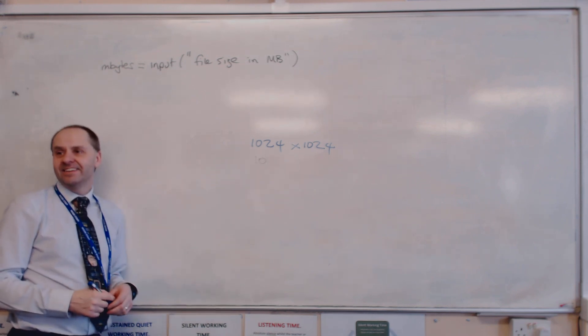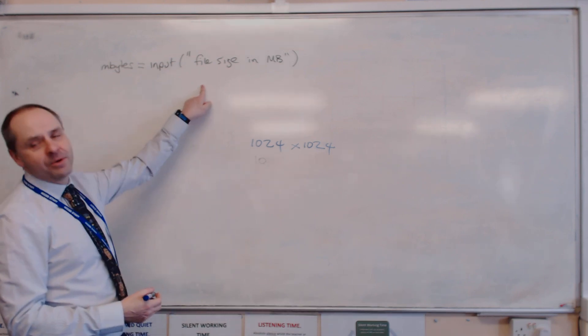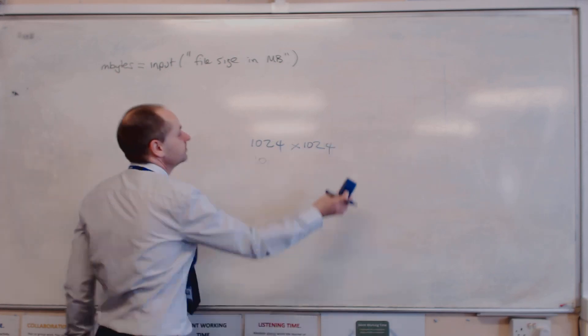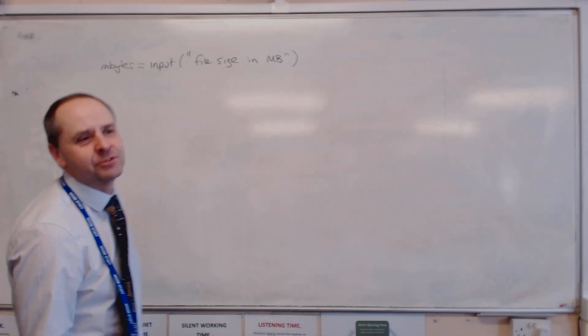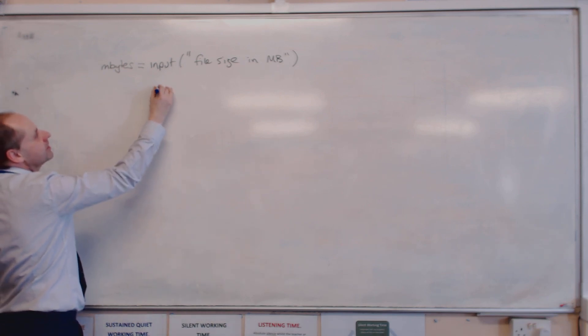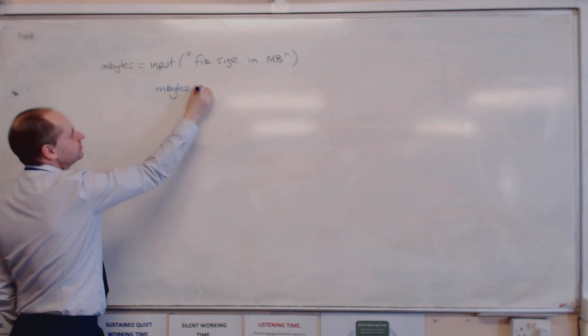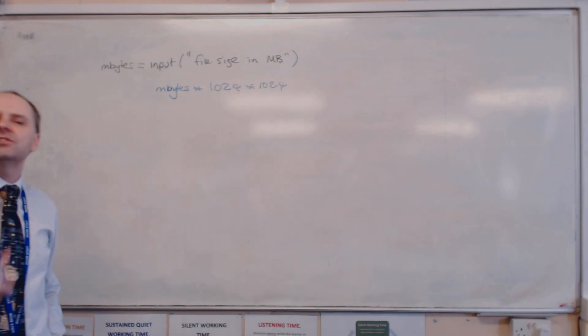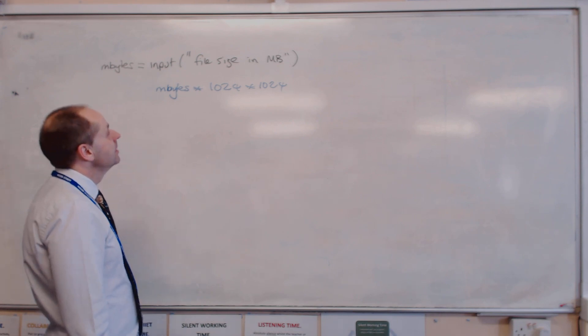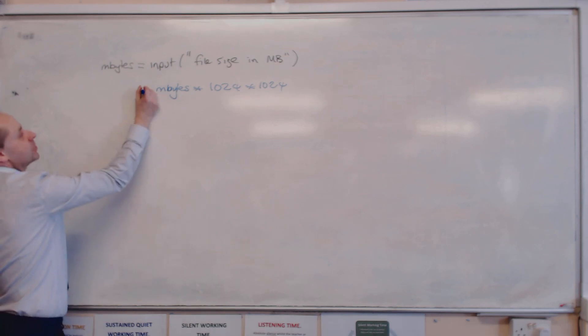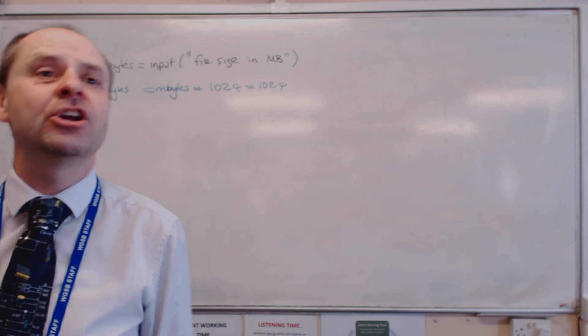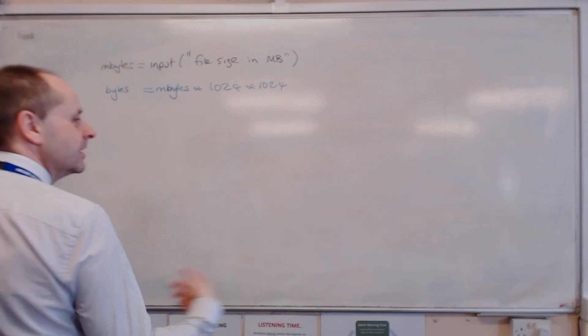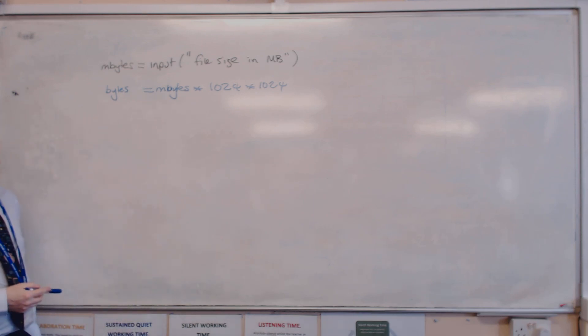I'm going to do the value I've been given in megabytes, turn it into kilobytes, turn it into bytes - 1024 times 1024. I need to store that somewhere. So I'll put my storage operator and come up with a name like bytes. We're trying to make this clear to the examiner.